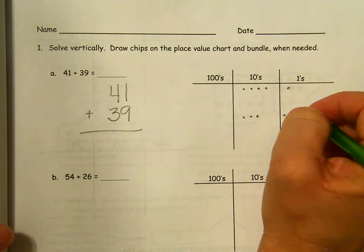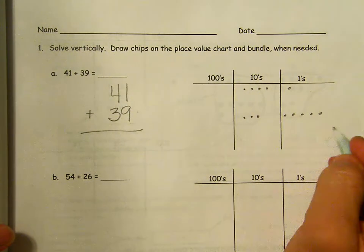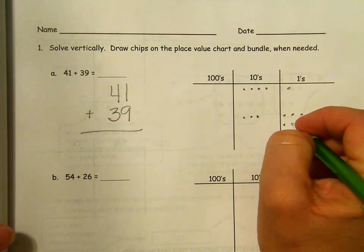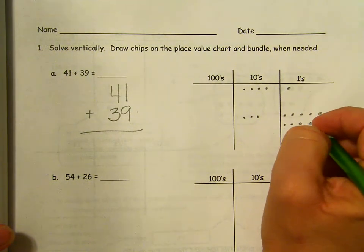One, two, three, four, five. Remember to do it in five groups. It makes it so much easier for you to see what you have. Six, seven, eight, nine.